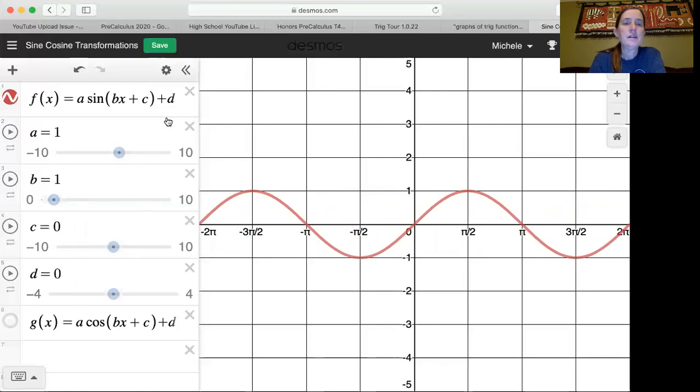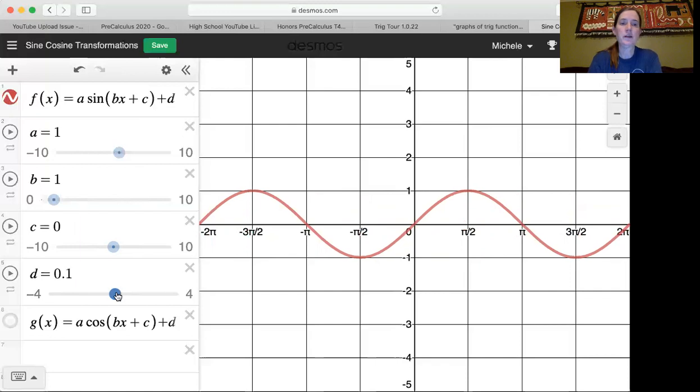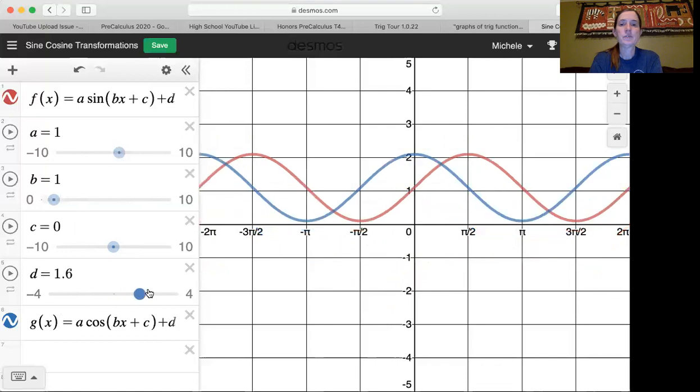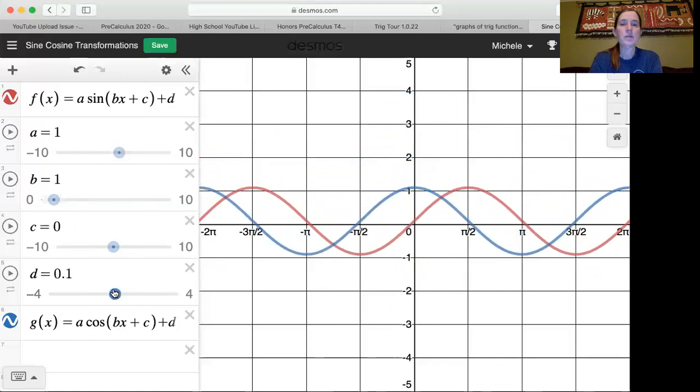And then d is a vertical shift up and down. And of course, if d is positive, it shifts up. And negative, it shifts down. And then the same thing works for cosine. So you could shift them all up and do that. So that's a really quick review of sine and cosine.